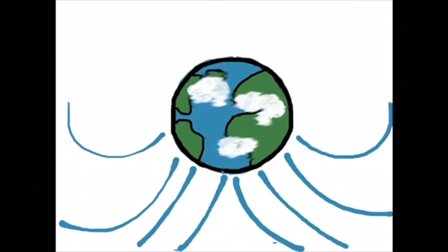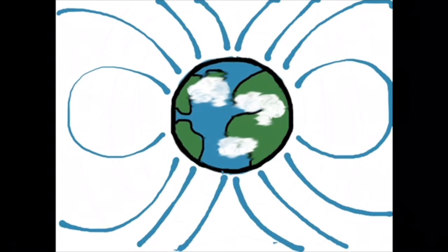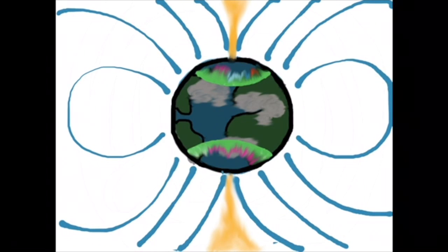Earth's magnetic field is very strong, but some particles of the sun from the solar winds run along the outer layers of the magnetic field and make their way to the poles. These particles create the polar auroras.